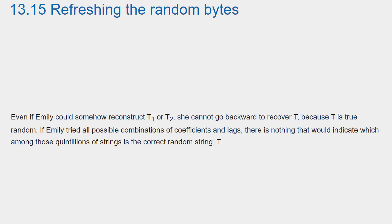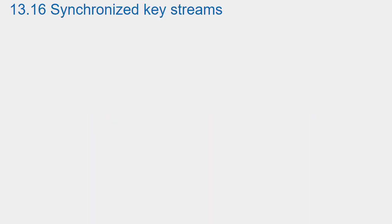Even if Emily could somehow reconstruct T1 or T2, she cannot go backward to recover T, because T is true random. If Emily tried all possible combinations of coefficients and lags, there is nothing that would indicate which among those quintillions of strings is the correct random string T.